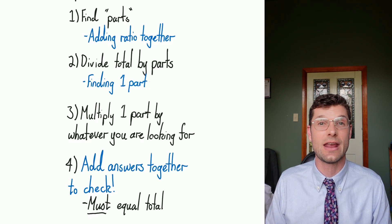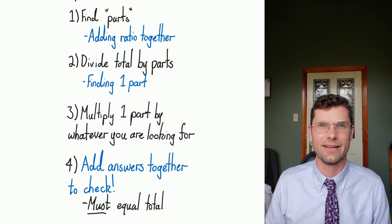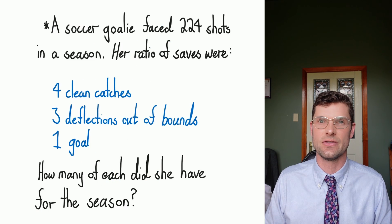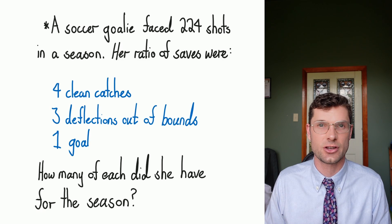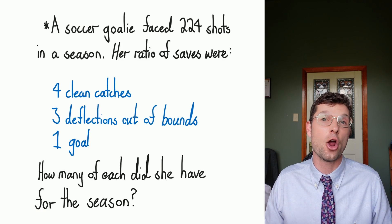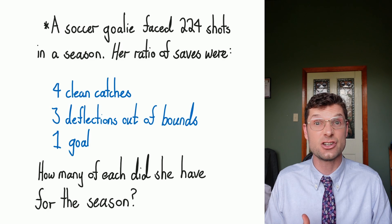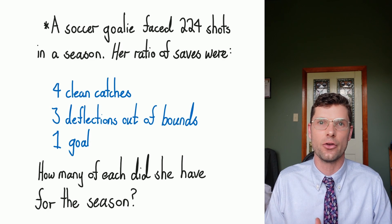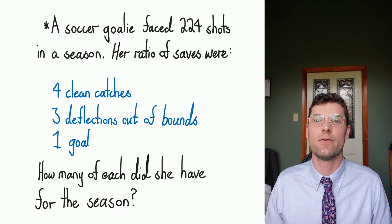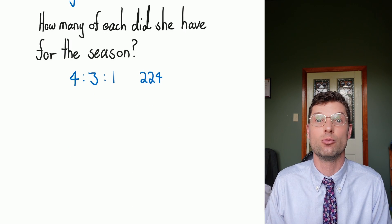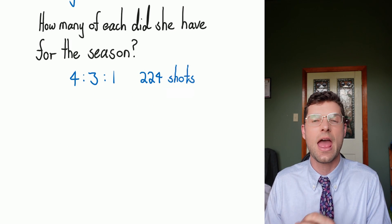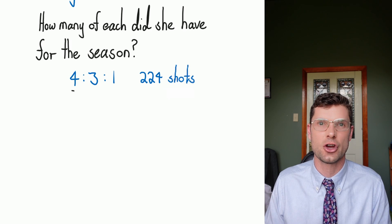We're gonna look at another example with three parts to the ratio this time. So a soccer goalie faced 224 shots on goal for the whole season, and her ratio was 4 catches, 3 deflections, and 1 goal scored. We wanna work out how many of each actually happened for the whole season. So instead of writing all this information out every single time, we're gonna say the ratio is 4 to 3 to 1, and we're looking at 224 shots on goal.